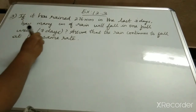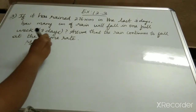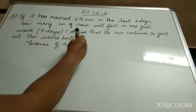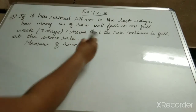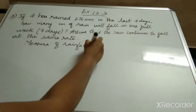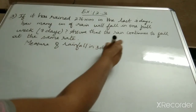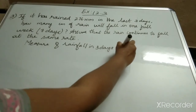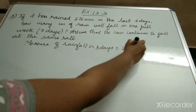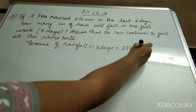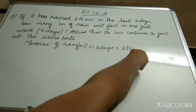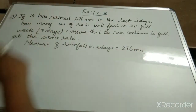So the measure of rainfall in 3 days is equal to 276 mm. So for 3 days it is 276 mm.